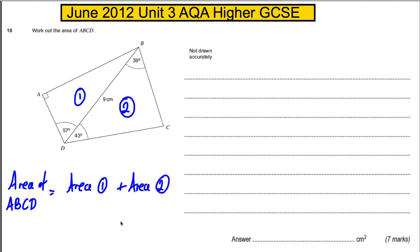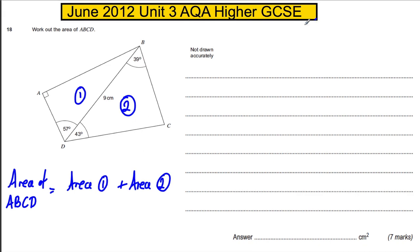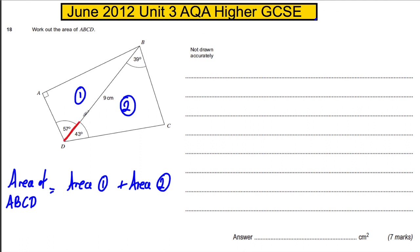Now we could go about trying to find the area of each of the different ones. I'm actually going to start with the non-right angle triangle here. We've got a lot of information here. What I'm working on currently is this triangle here.